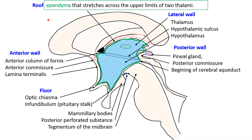The roof is lined by ependymal cells that stretch across the upper limits of the two thalami.